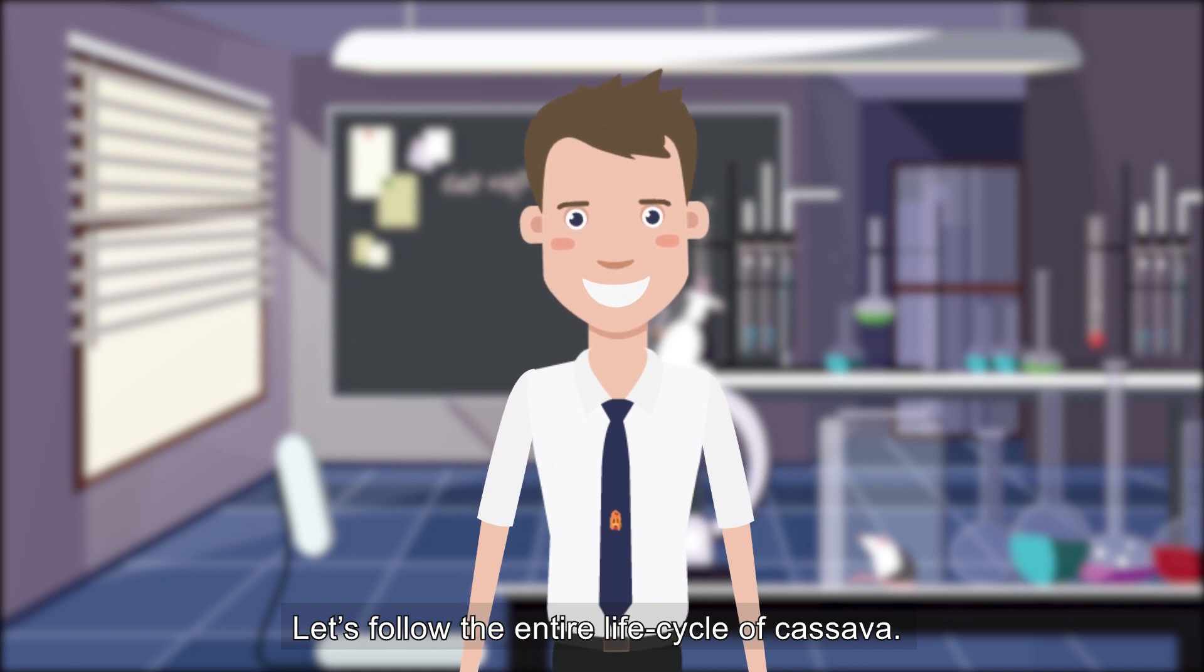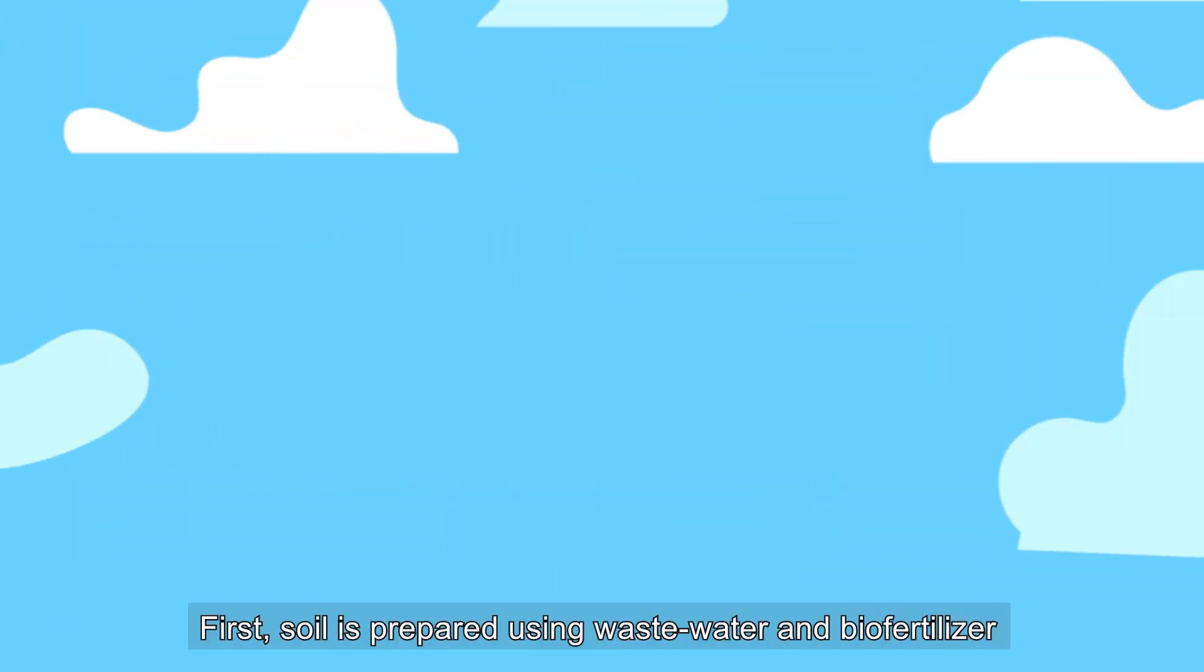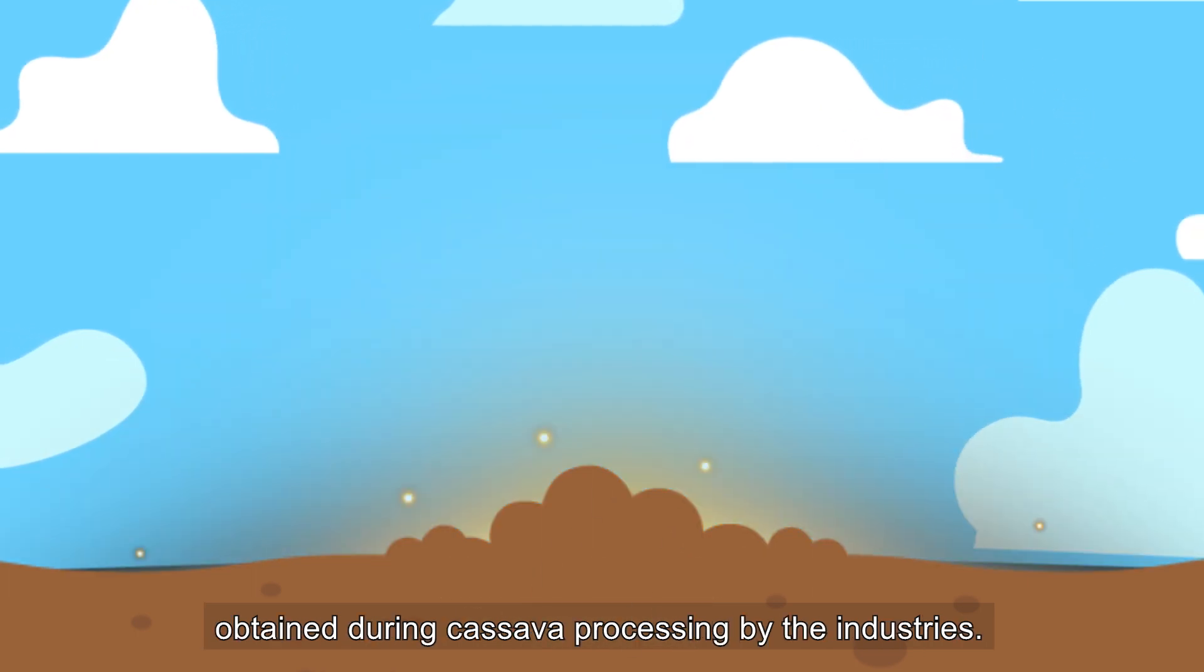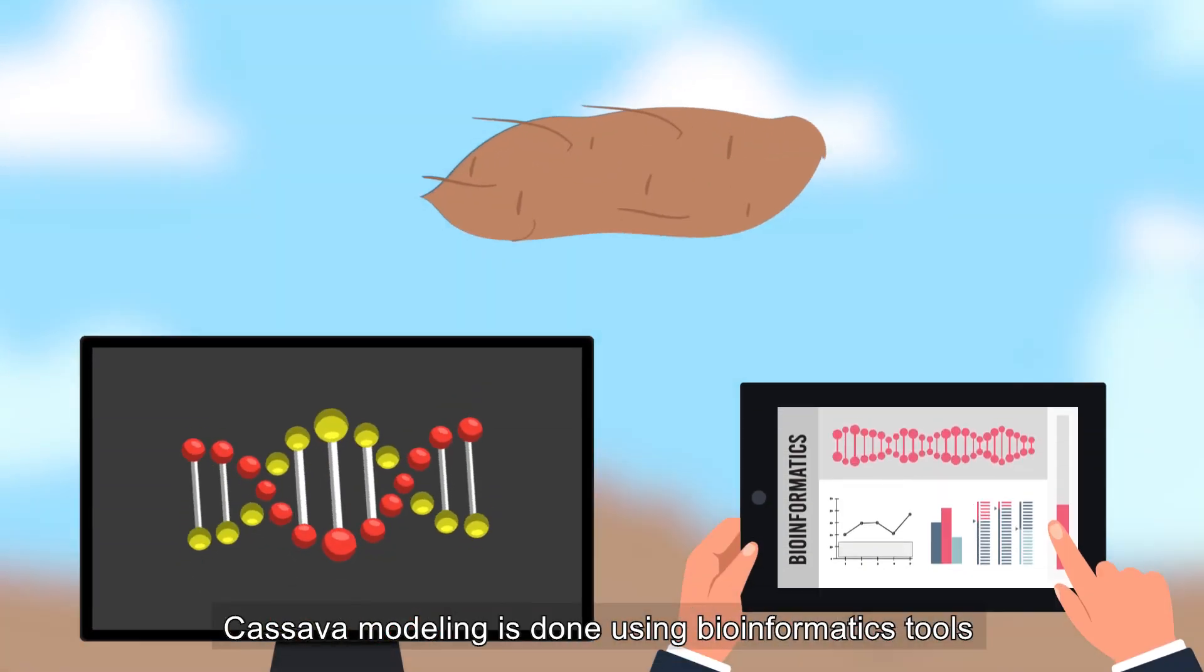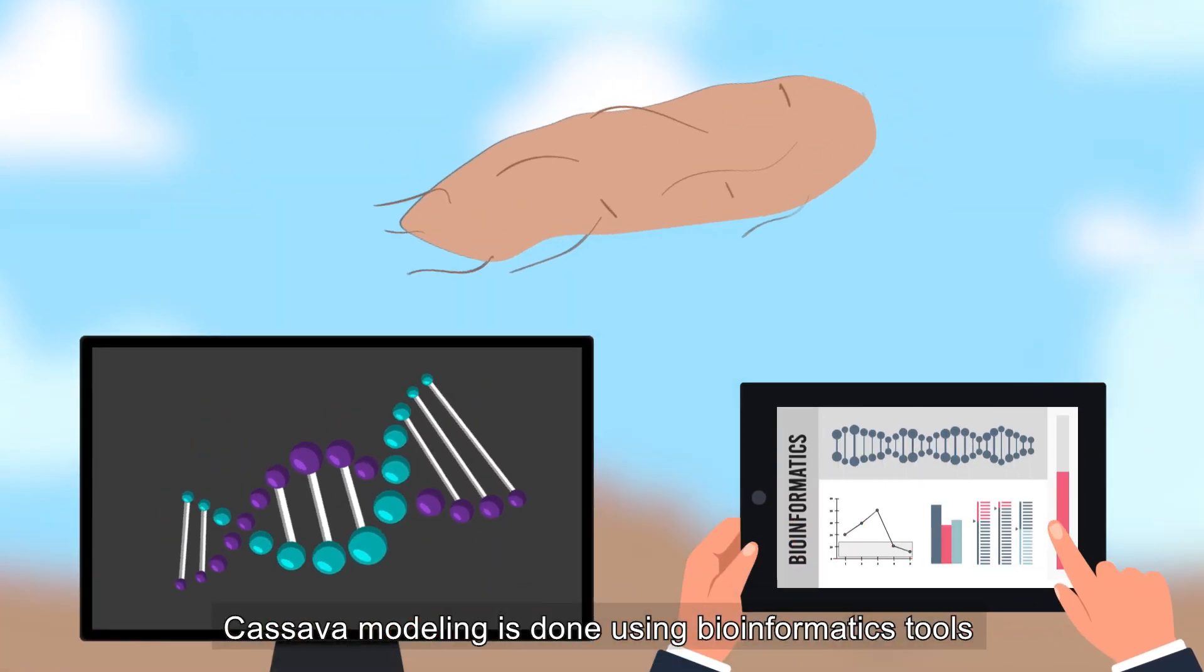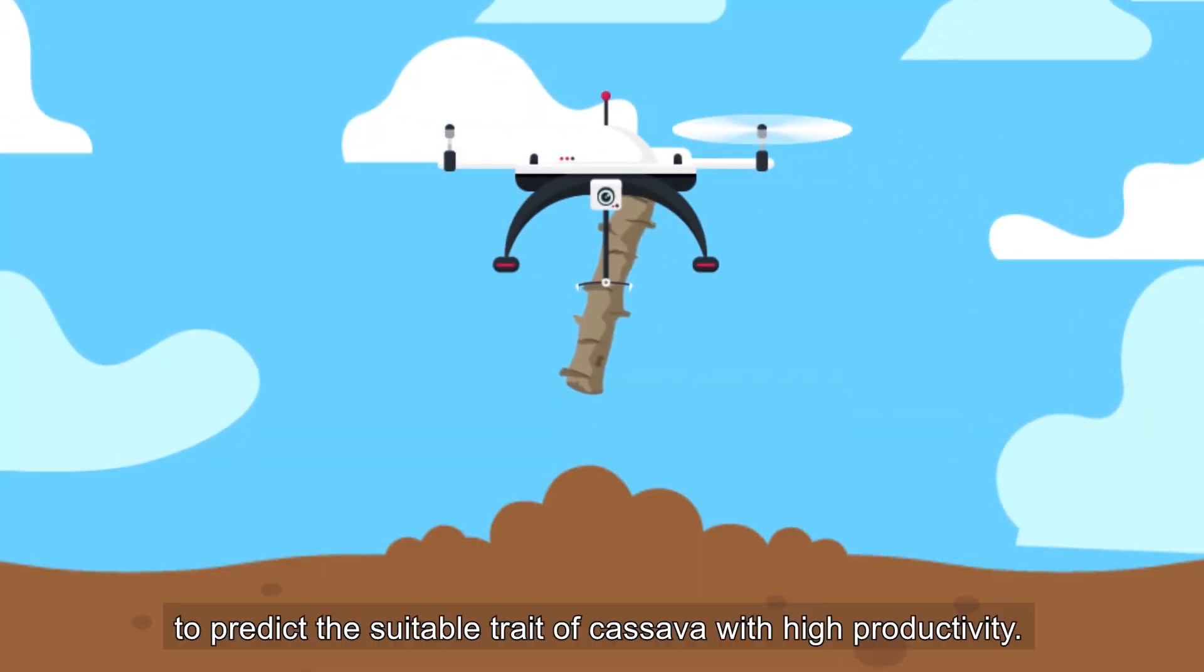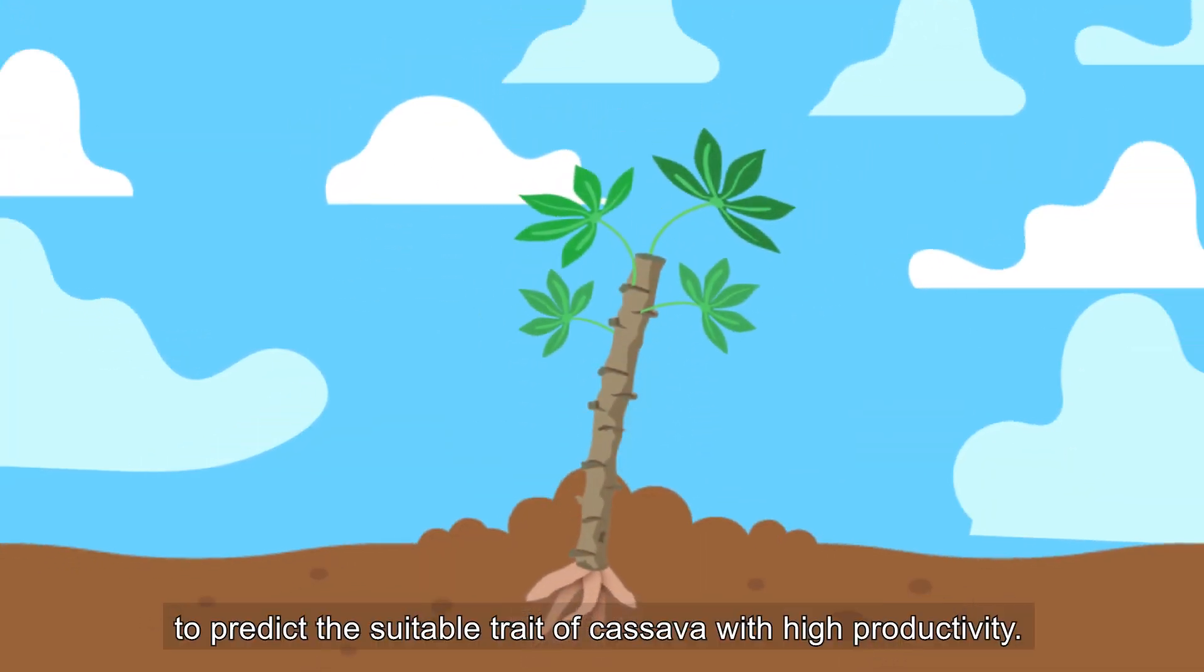Let's follow the entire life cycle of cassava. First, soil is prepared using wastewater and biofertilizer obtained during cassava processing by the industries. Cassava modeling is done using bioinformatics tools and synthetic biology approach to predict the suitable trait of cassava with high productivity.